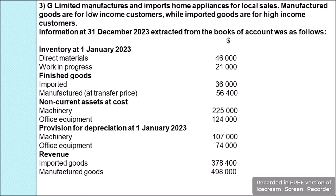The question says that G Limited manufactures and imports home appliances for local sales. Manufactured goods are for low income customers while imported goods are for high income customers. Information at 31 December 2023 extracted from the books of account was as follows: Inventory at 1 January 2023 — Direct material $46,000, Work in progress $21,000, Finished goods imported $36,000. Non-current assets at cost: machinery $225,000, office equipment $124,000. Provision for depreciation at 1 January 2023: machinery $107,000, office equipment $74,000.